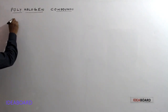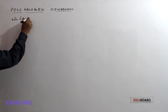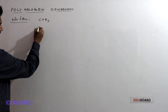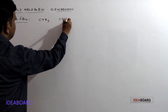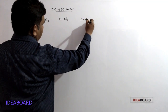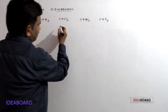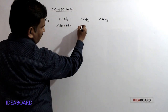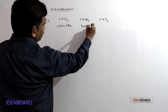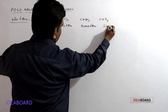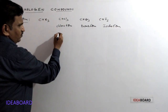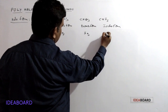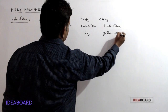Mainly we can explain about haloforms. The general formula of haloforms is CHX3. CHX3 means CH Cl3, or CH Br3, and CH I3. CHCl3 is called chloroform, CHBr3 is called bromoform, and CHI3 is called iodoform. Chloroform is a colorless liquid, bromoform is also a liquid, but iodoform is a yellow crystalline solid.